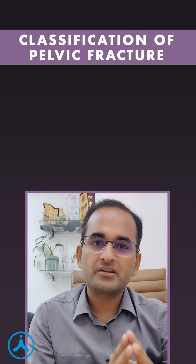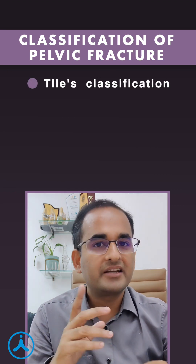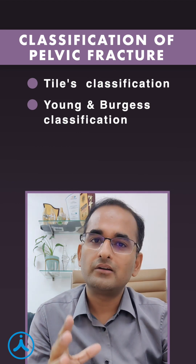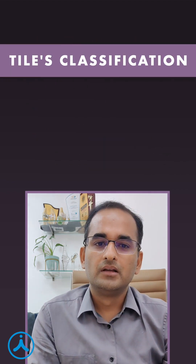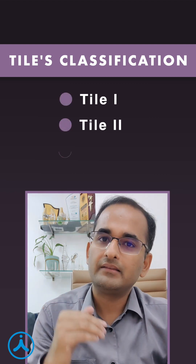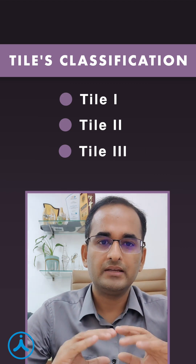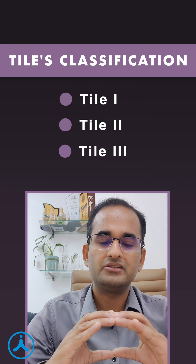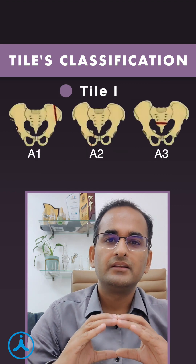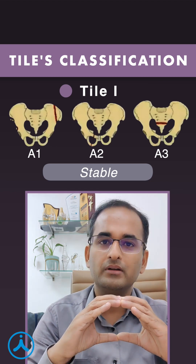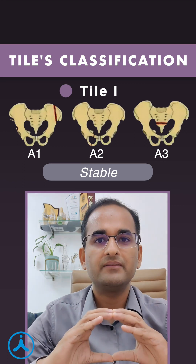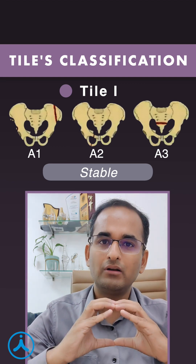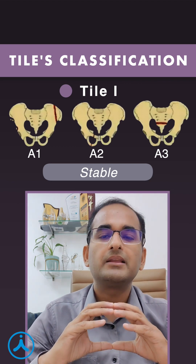Now let's talk about classification of pelvic fractures. There are three major classifications: first is Tile's classification, second is Young's and Berger's classification, and third is the World Society for Emergency Surgery classification. In Tile's system, divided into Tile 1, Tile 2, and Tile 3 — in Tile 1 the fracture is stable. There is a fracture of the pubic bone or ileum bone or any part of the pelvic ring, but stability is maintained. All ligaments are intact, maybe with some bone injury not involving the pelvic ring. That is Tile 1.